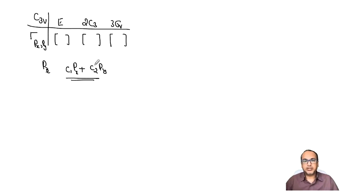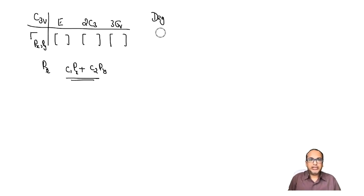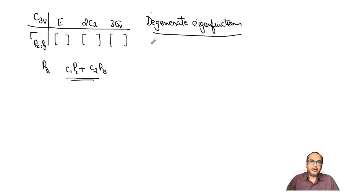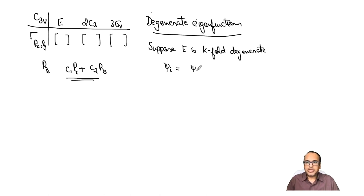When we did C3 rotation we got minus half px plus or minus root 3 by 2 into py. So that means eigenfunctions can also have degenerate eigenvalues. Let us look at this example in more detail. Suppose E is the energy of a particle or a system and is k-fold degenerate — what does that mean?